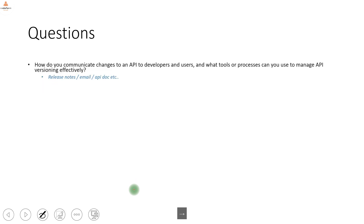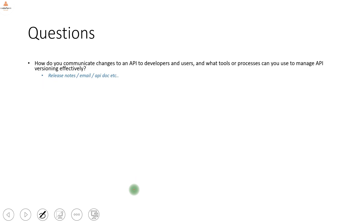How do you communicate API changes to developers and users, and what tools or processes can you use to manage API versioning effectively? When you add a new version, you communicate to the client via release notes, email, API documentation, and so on.